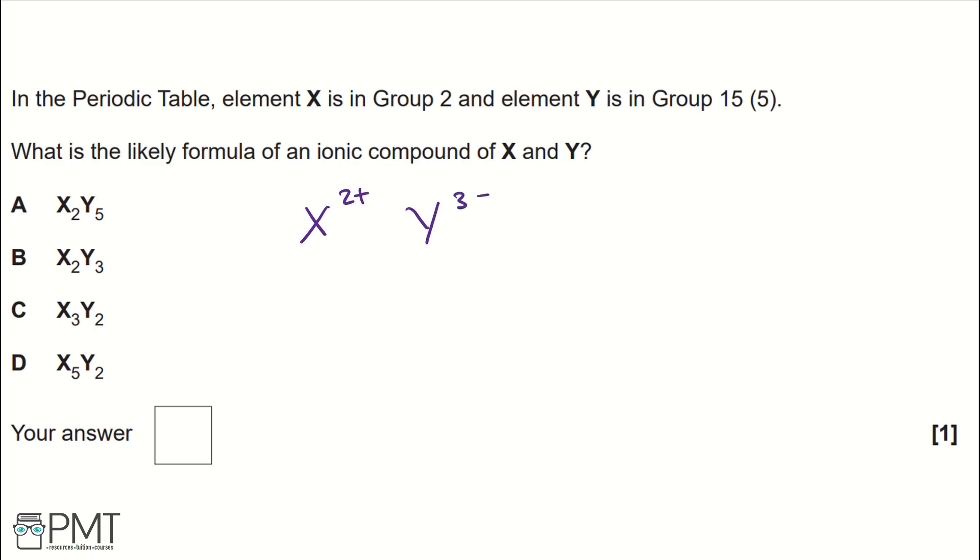There is a method when working out ionic compounds or writing their formulas, and it's called the crossover method, which means this 2 goes to the Y, making it Y2, and this 3 goes to the X, making it X3.